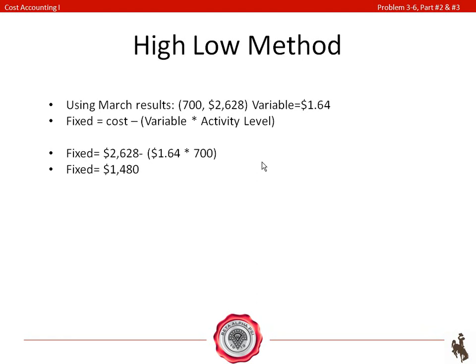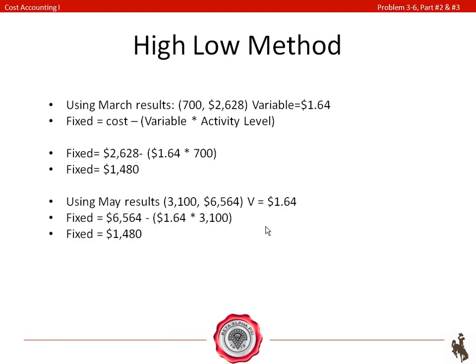Now, you can also get this exact same answer by using your May results. So, we're just going to prove this right now. With your May results, you have your activity level of 3,100 and your total cost of $6,564 and variable costs of $1.64. And you just go ahead and plug that in the same equation and you notice that you get the same results of $1,480. So, either way, you'll get the same results for fixed costs.